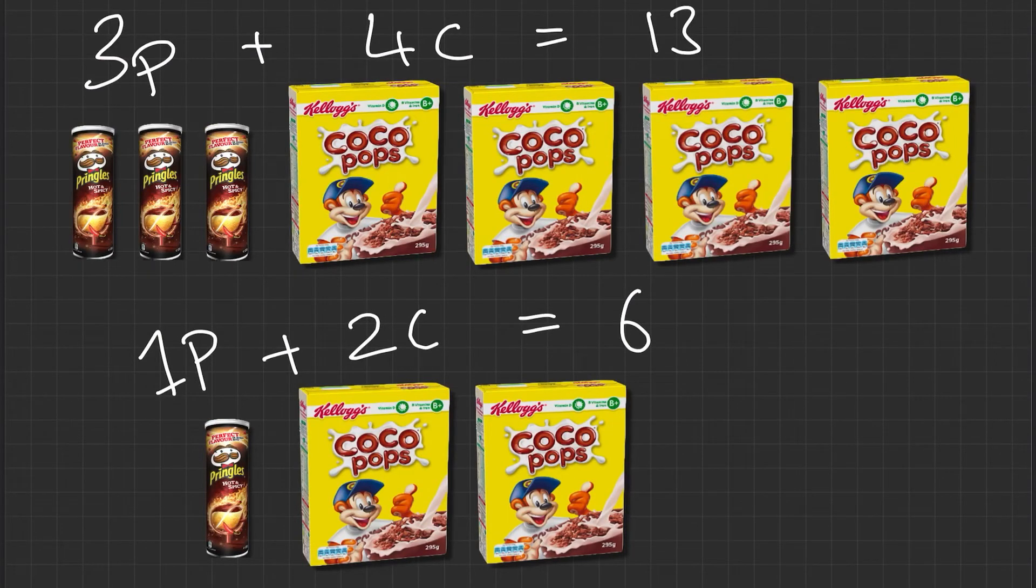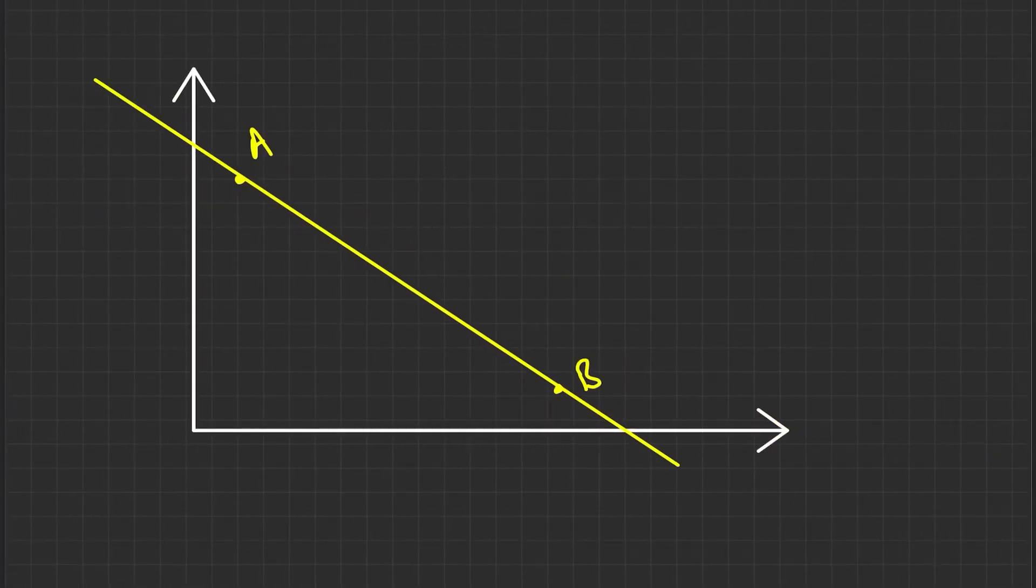Now, in order to plot any graph, we only need two points. We need point A and point B, wherever they are, it doesn't really matter. And then we can draw a straight line through those points to get a graph. Now, the same is true here. If you look at our equations, we've got 3P plus 4C is equal to 13 and 1P or just P plus 2C is equal to 6. So what I'm going to do here is I'm going to take these two equations.